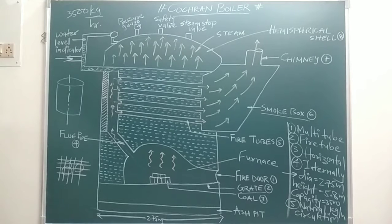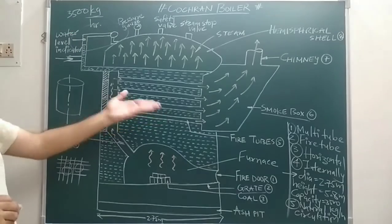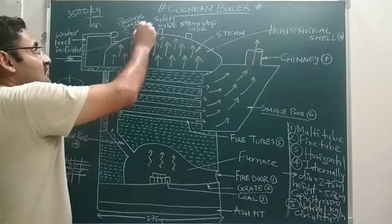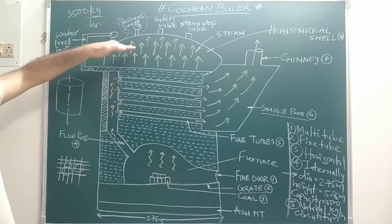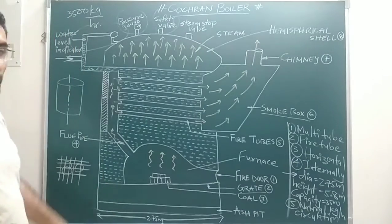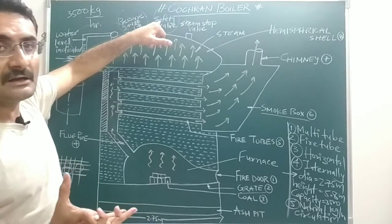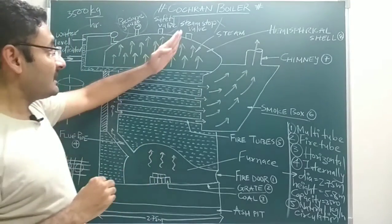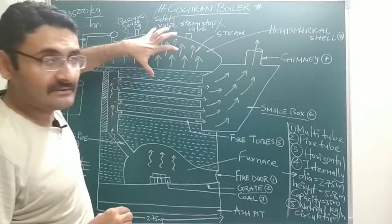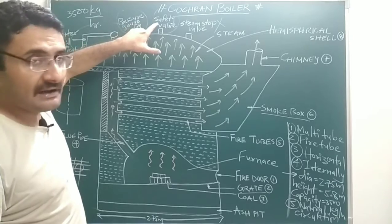Now we will discuss the mountings located at the top of the boiler. First is the water level indicator, which indicates how much water is present inside the boiler. Next is the pressure gauge, which indicates how much pressurized steam is present inside the boiler — for example, 20 bar or 22 bar. Next is the safety valve, which automatically opens when excess pressure is created inside the boiler, to avoid accidents.